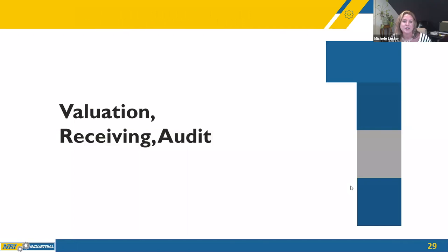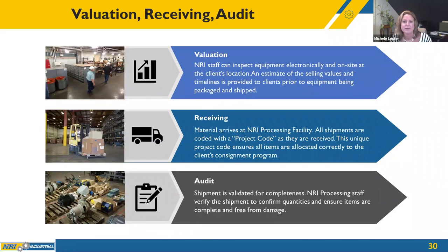Step one of our consignment process: valuation, receiving, and auditing. For valuation, NRI inspects equipment electronically or on-site, offering an estimated selling value. For receiving, material arrives at one of NRI's processing facilities where a unique project code is assigned so your materials are allocated to your program. For auditing, the shipment is validated for completeness — NRI's processing staff verify quantities and ensure items are complete and free from damage.